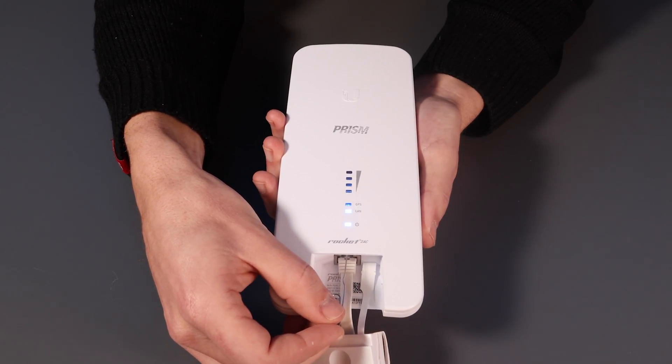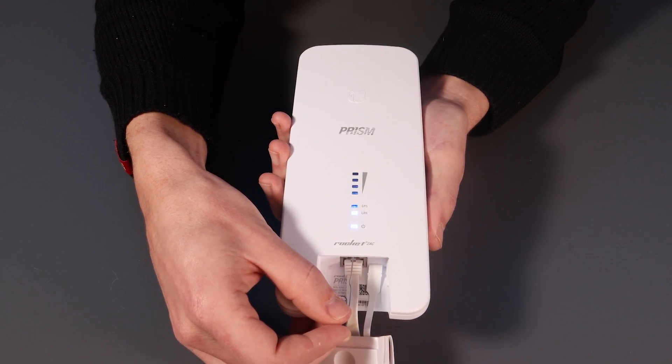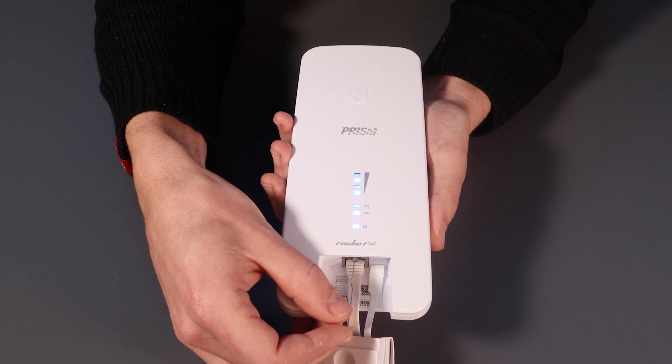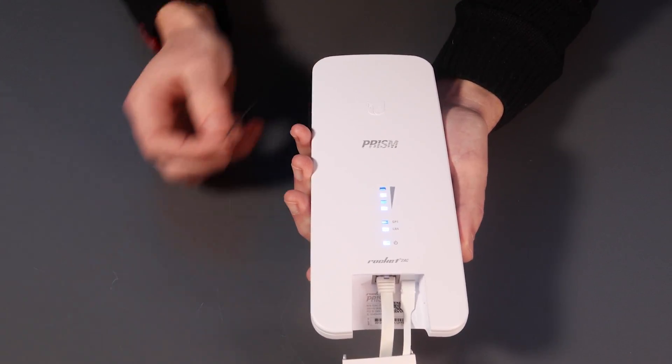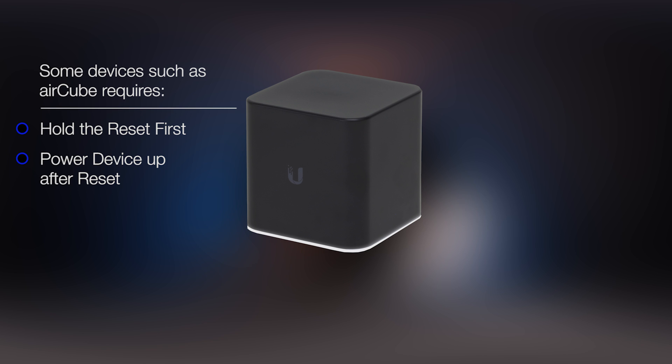Now it's time to put the device into recovery mode. This can be done by holding down the reset button for approximately 30 seconds while powered on. This will initiate a system reset, and shortly after the device will be in recovery mode. Some devices such as AirCubes require you to hold the reset then power it up to initiate this process. The LED status on AirMax and LTU devices will flash in a two-on, two-off sequence. For UniFi devices, you'll notice the LED will cycle through white, blue, and off states to indicate that they are ready to receive firmware.